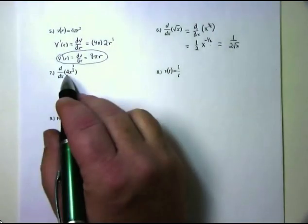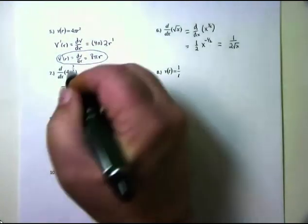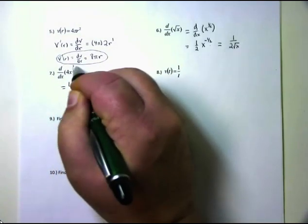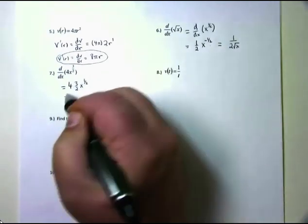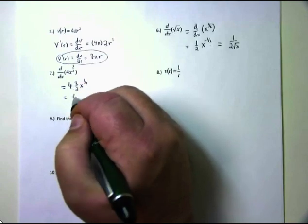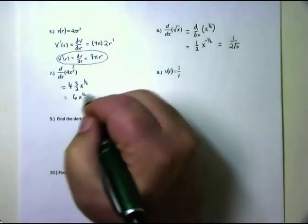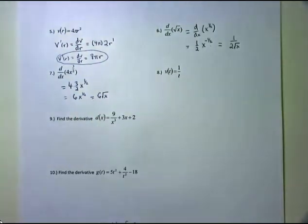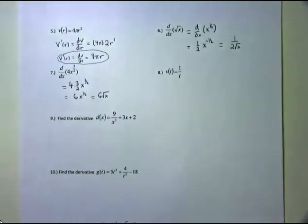This is also the d/dx notation — take the derivative with respect to x of what follows. Here d/dx of 4x to the 3/2. Well, 4 is a constant. Derivative of x to a power: bring down the power 3/2, keep x, and subtract 1: 3/2 minus 1 is 1/2. Then clean it up: 2 goes into 4 twice, 2 times 3 is 6, giving 6x to the 1/2. Or you can write it as 6√x. Don't forget parentheses around your exponent in WebWork.